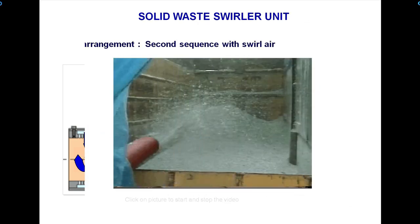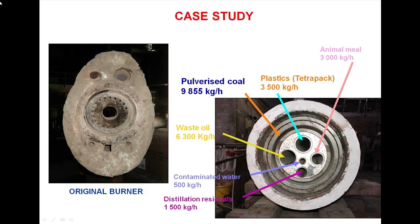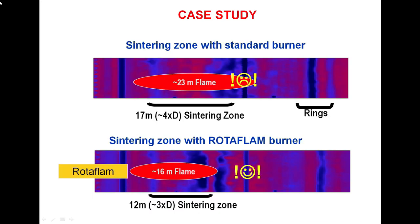Test arrangement — second sequence with spill air. Case study: the original burner was replaced with a new burner. Fuels used include animal meal, plastic, pulverized coal, waste oil, contaminated water, and distillation residuals. Center ring zone with standard burner: 23-meter flame, 17-meter ring zone. With the rotoflame burner: 16-meter flame, 12-meter center ring zone.